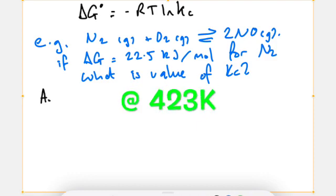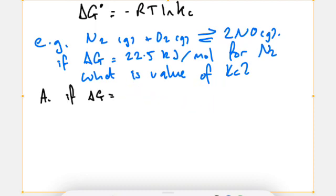I did forget to write in 423K, so there you have it, in glorious green color instead. So if delta G is minus RT lnKc, I want to know lnKc is going to be delta G over minus RT.